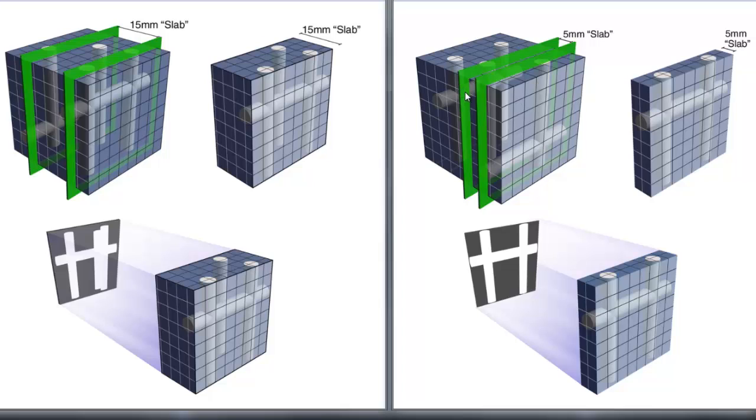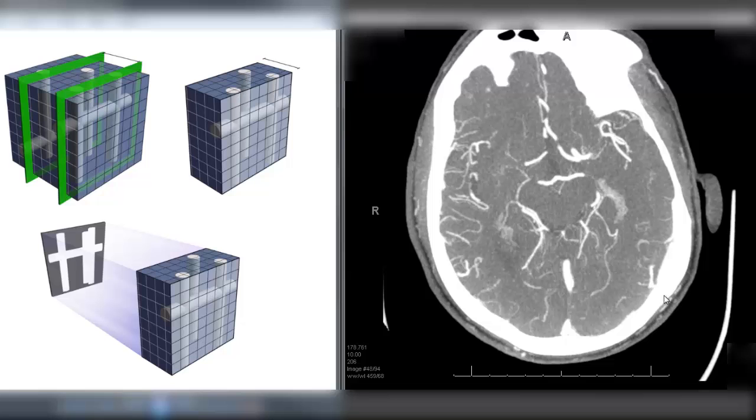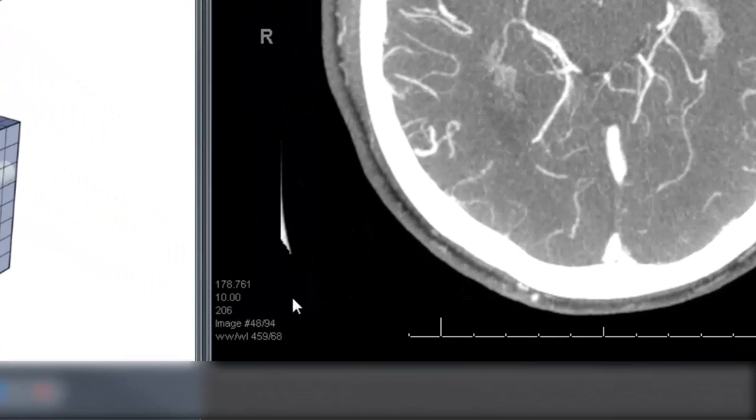Sometimes these will be 5 millimeter thick slabs, sometimes it will be 10 millimeter thick slabs depending on the protocol used on the scanner. When you're looking at a thick MIP reconstruction in any plane you can see the thickness, the slice thickness provided in the DICOM overlay typically in the bottom left hand here.